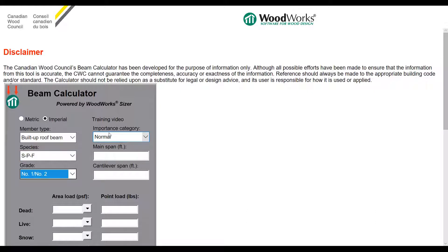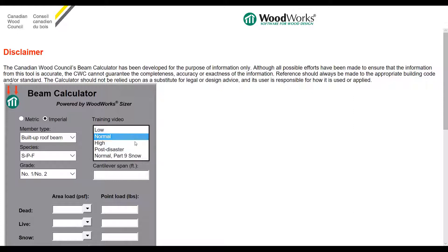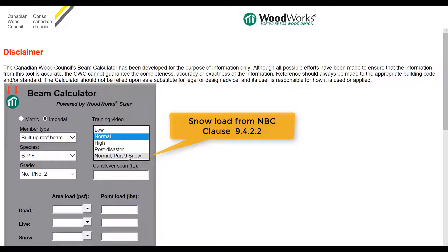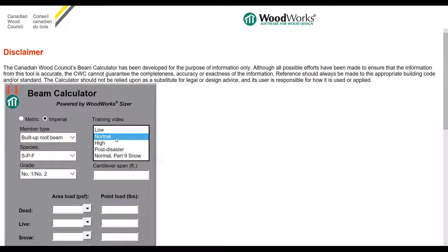To the right is the importance category. You can choose between low, normal, high, post-disaster, and normal Part 9 snow. The importance category for a typical timber structure is normal. For a normal structure, if your snow load input comes from Part 9 of the building code, you may want to select normal Part 9 snow. In other cases, you can select normal, which is what I'll do for this example.